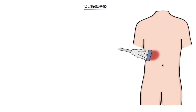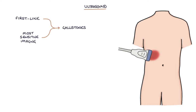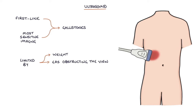Let's talk about the use of ultrasound. An ultrasound scan is a useful first-line investigation for symptoms of gallstone disease — for example, abdominal pain, right upper quadrant pain, and jaundice. It is the most sensitive initial imaging test for gallstones. CT scans are not good at identifying gallstones or biliary disease. The use of ultrasound is limited by the patient's weight — for example if they're obese — gas filling the bowel that might obstruct the view, and any discomfort the patient experiences from the ultrasound probe.